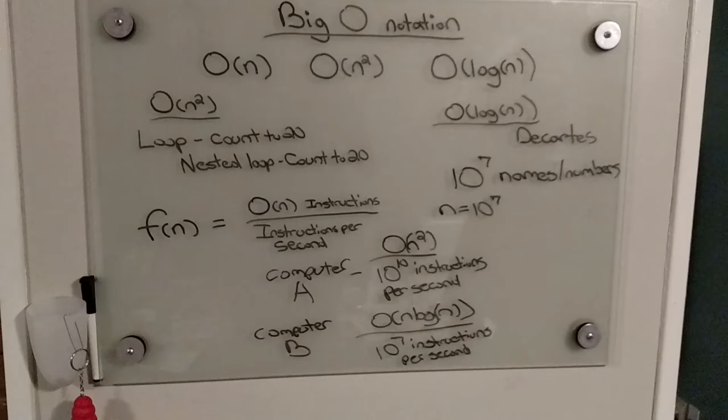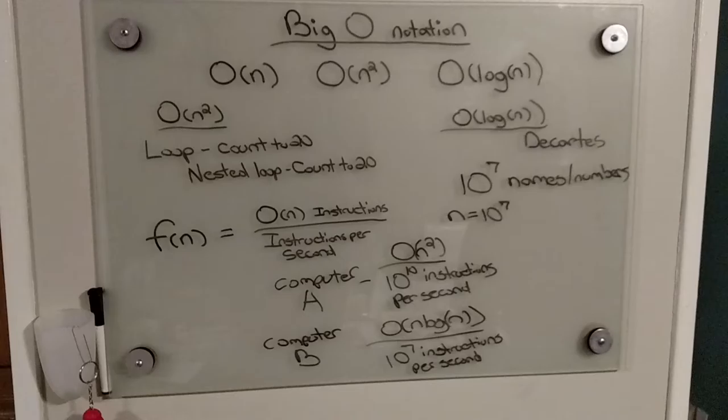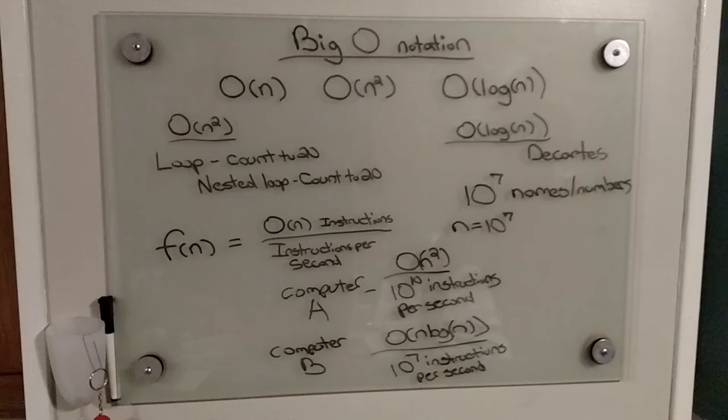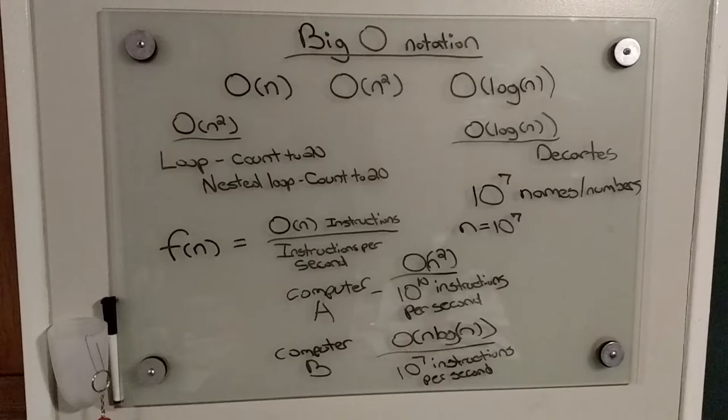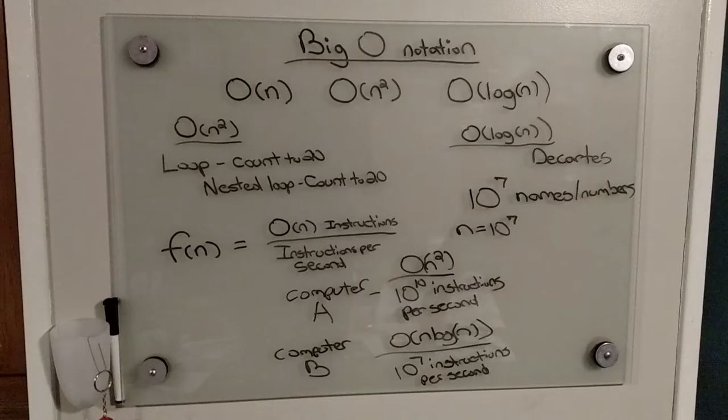And so what I would like you to do is actually perform the math on these two. O(n²), with the faster computer of 10 to the 10 instructions per second, O(log n) set of instructions on a slower computer at 10 to the 7 instructions per second. And where applicable, you can divide it into minutes or hours or however long it may take.